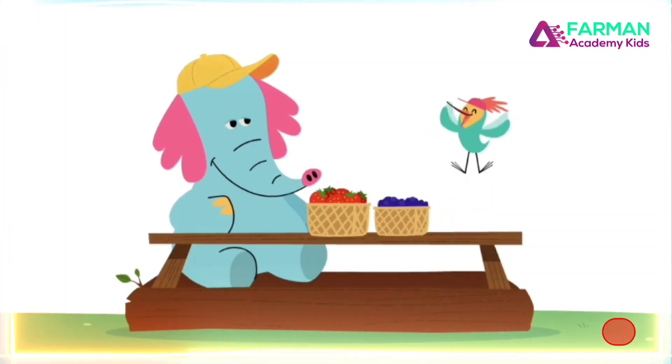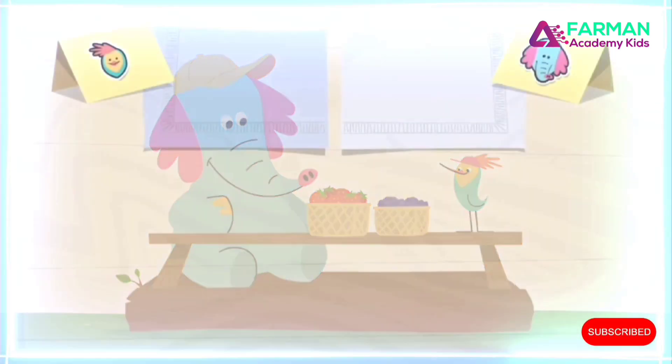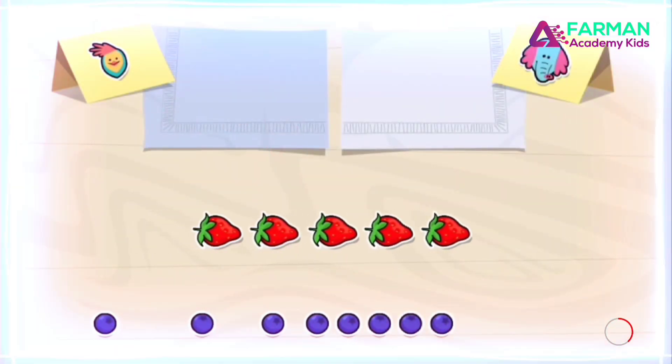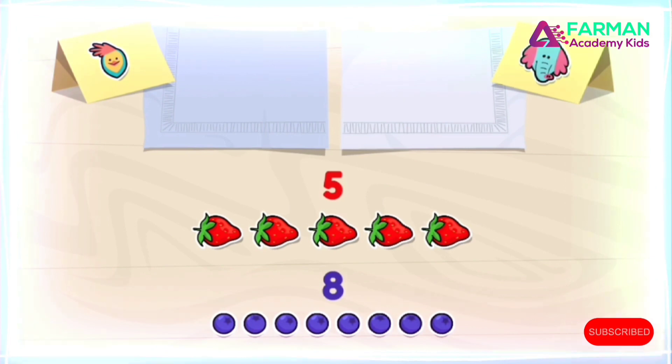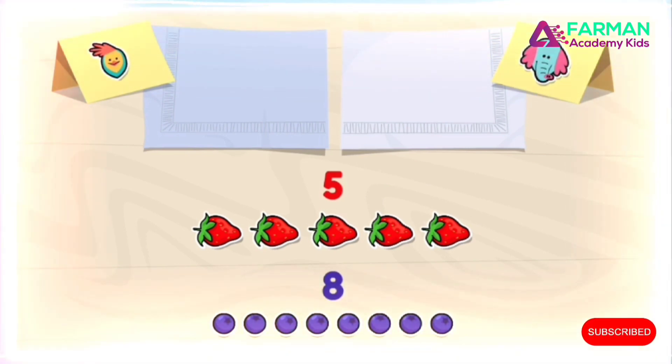Hmm, we have a very mysterious problem to solve. We have two different types of fruit. Five strawberries and eight blueberries. Which of these fruit can we divide evenly between Ollo and me so that we have the same number?